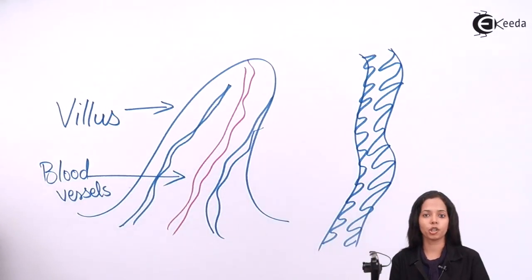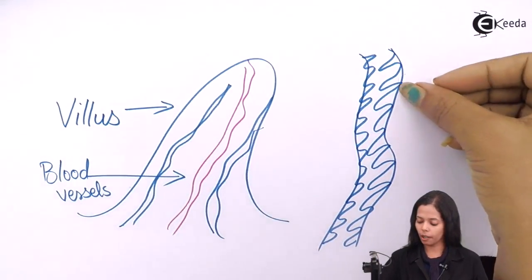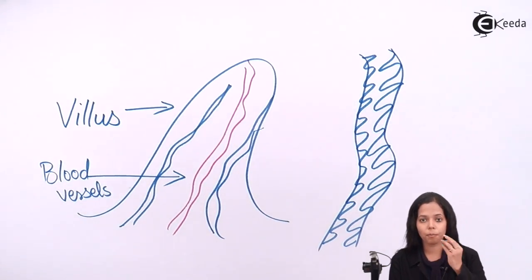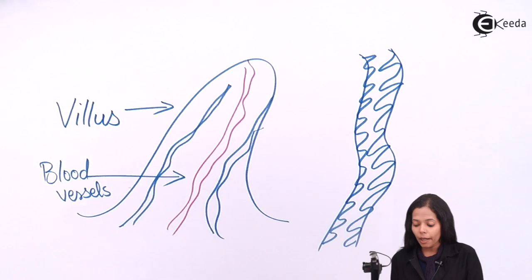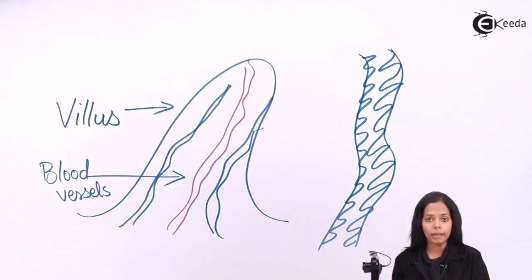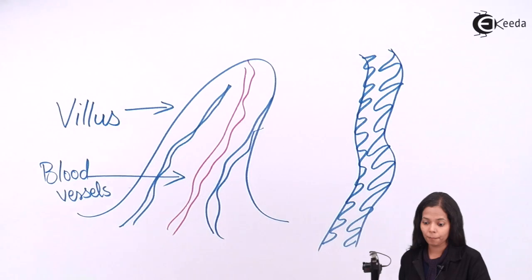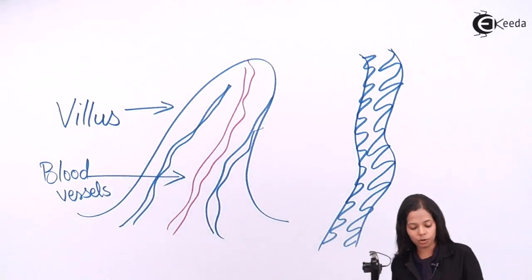The finger-like projections present on the inner lining of small intestine are called villi. You can see internally it has a supply of vessels - both lymphatic as well as blood vessel supply is present inside the villi. The function of villi is to increase the surface area for absorption.